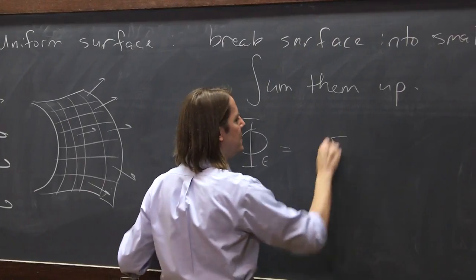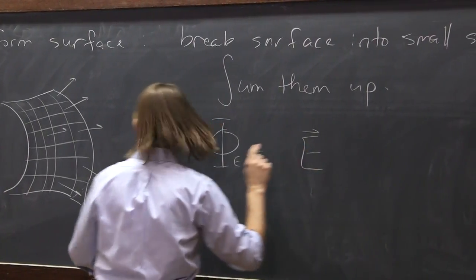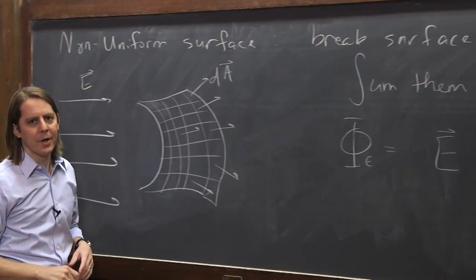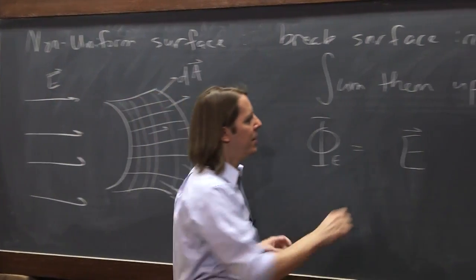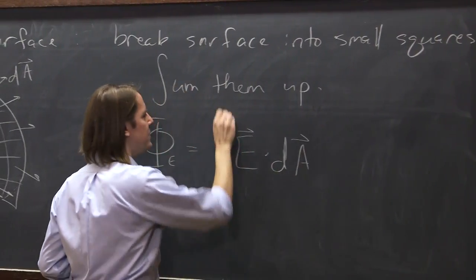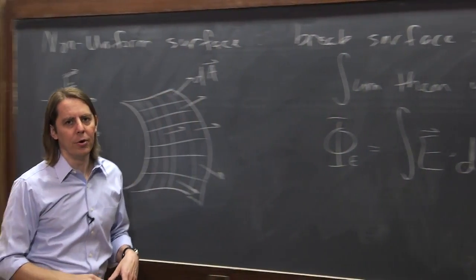So phi E, the electric field flux, usually it's E dot A. But here, we're going to think of each one of these as a DA, a little differential unit of area. So E dot DA. And then we just add that flux up over the whole area.